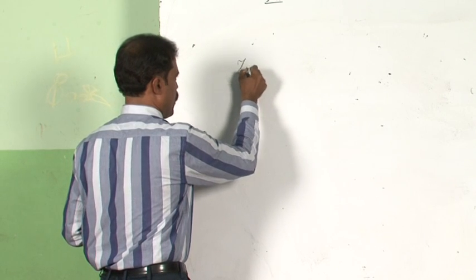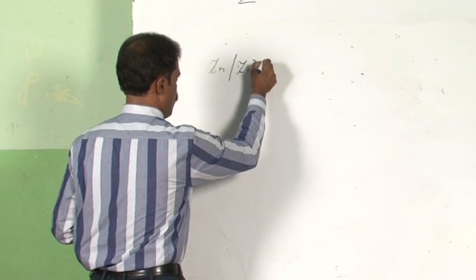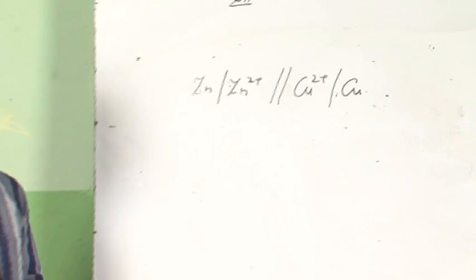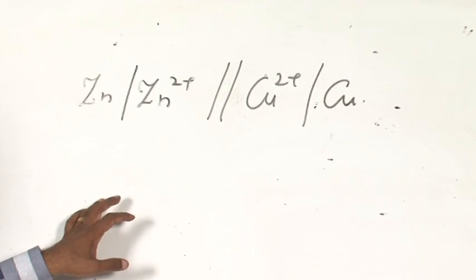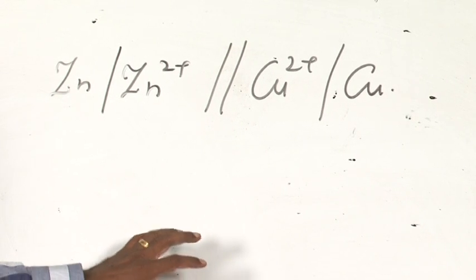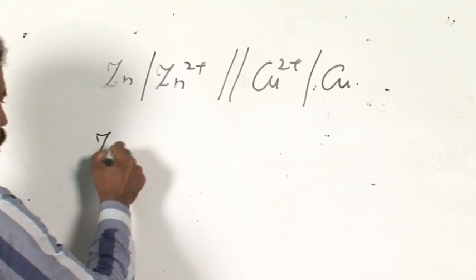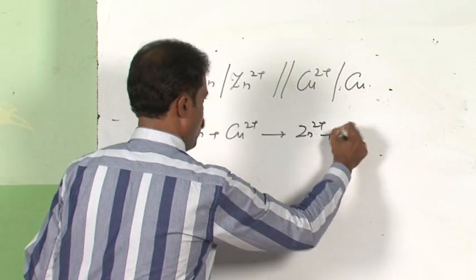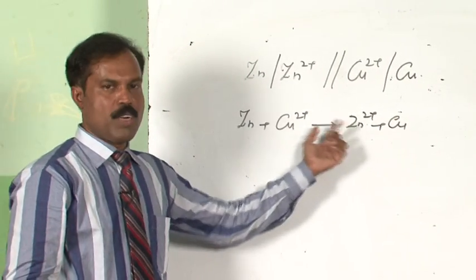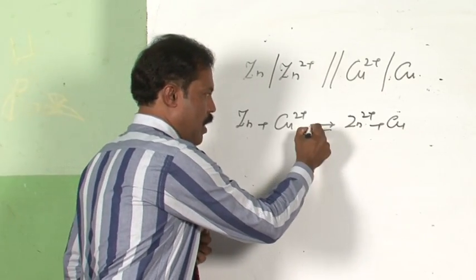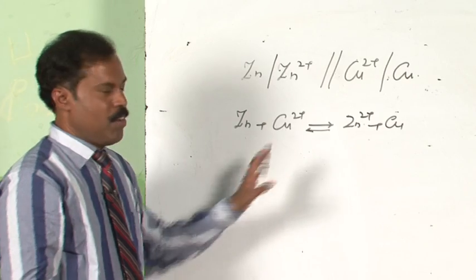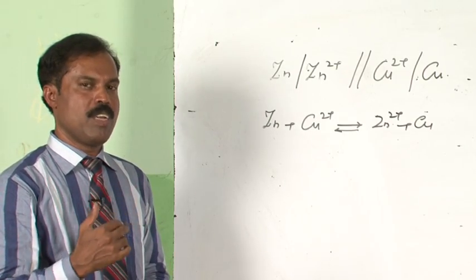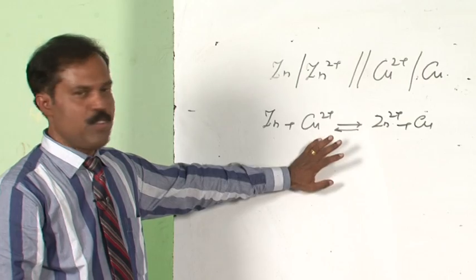Let us take the same Daniell cell: Zn | Zn²⁺ || Cu²⁺ | Cu. Assume the circuit is closed, so the reaction Zn + Cu²⁺ → Zn²⁺ + Cu proceeds. Ultimately, the reaction will come to an equilibrium. When it reaches equilibrium, will there be any EMF in the cell or not?